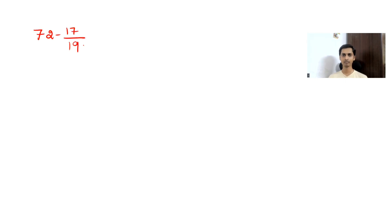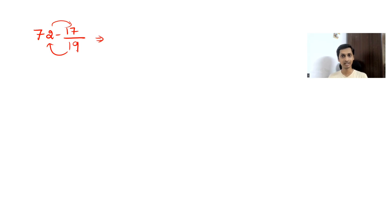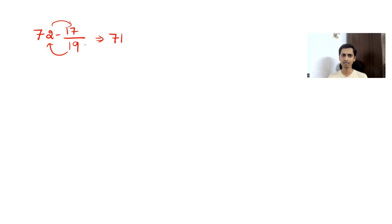The second shortcut involves subtracting a fraction from a whole number. For example, 72 − 17/19. Normally you'd multiply 19 by 72 and subtract 17, which takes time. The shortcut: the whole number gives 1 to the fraction, so write 72 − 1 = 71. Then take the difference between denominator and numerator: 19 − 17 = 2. The answer is 71 and 2/19.